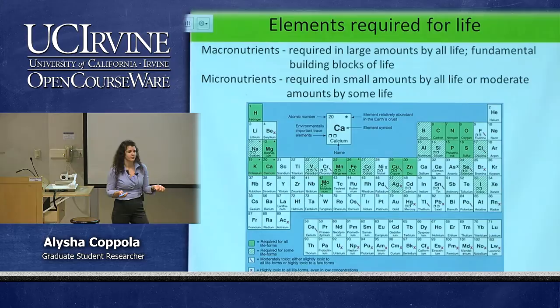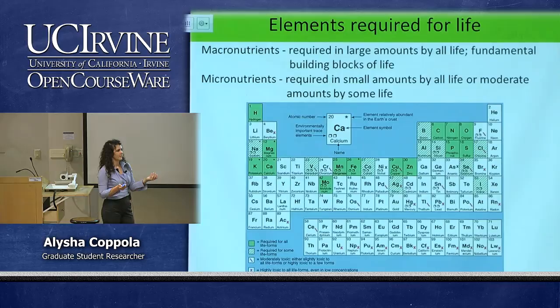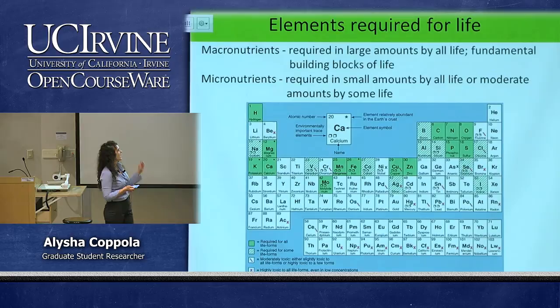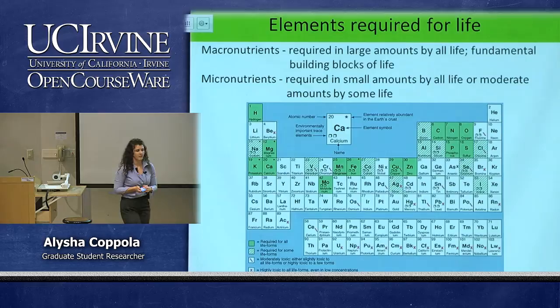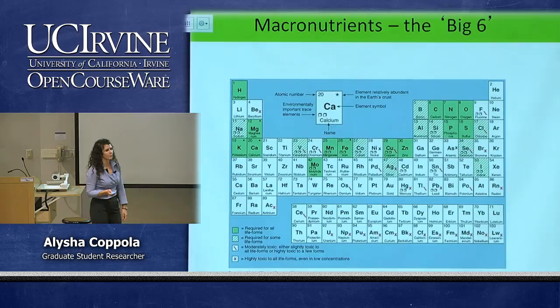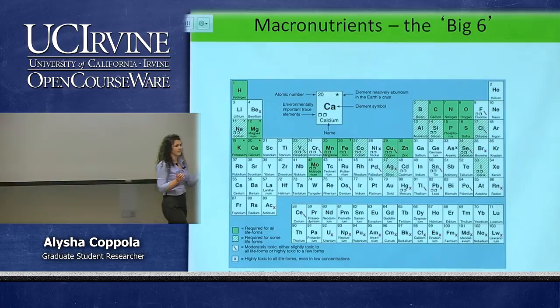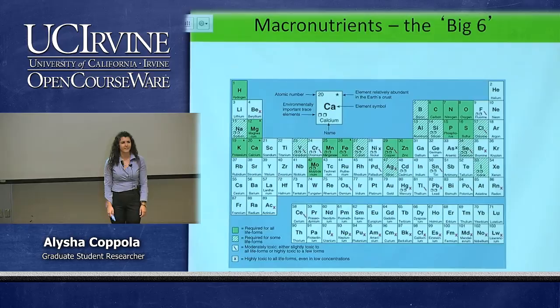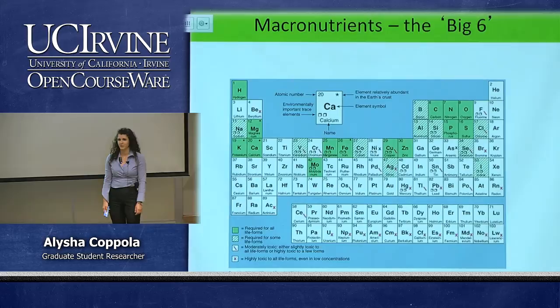Micronutrients are required in small amounts — not high concentrations — and they're not essential for all life forms. Those are shown in dashed green, like copper, which is required in small concentrations but not as important as something like carbon that we all need for growth. Within the macronutrients we divide them up into the 'big six' — the biggest, most important elements required for life.